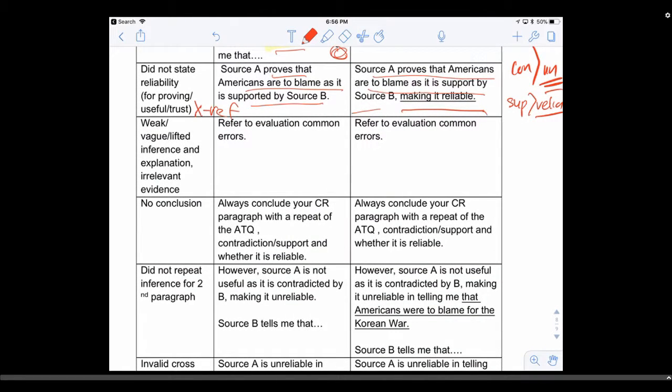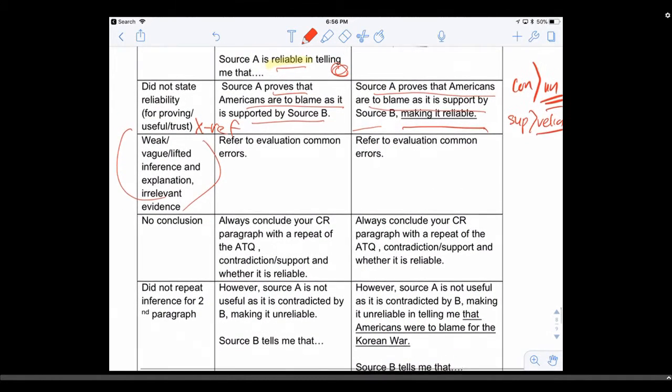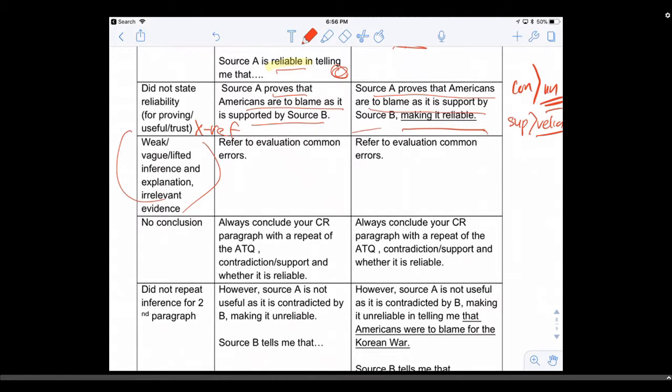Number three: if your explanation is vague, if your inference is weak or lifted, any of these things, then the paragraph is wrong. Make sure it is not vague. Make sure you explain it in two to three sentences.